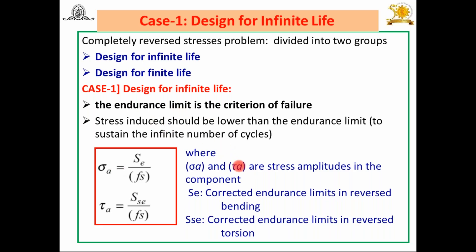If the component is subjected to reverse torsion, tau_a plays an important role: tau_a = Sse / FOS, where Sse = 0.5 Se (maximum shear stress theory). Se is found from Se = Ka × Kb × Kc × Kd × Se'. Substituting these values gives tau_a, which can then be used to determine other dimensions. Design for infinite life uses these two equations along with the approximate estimation method for Se.